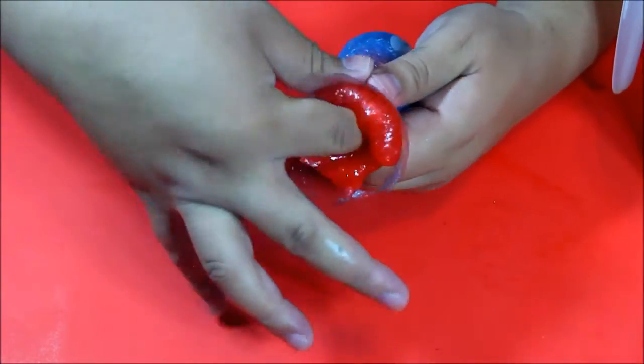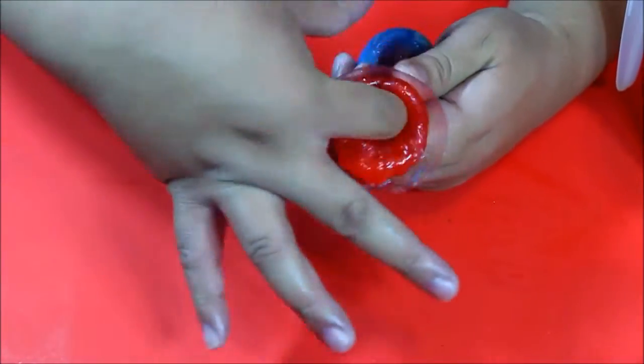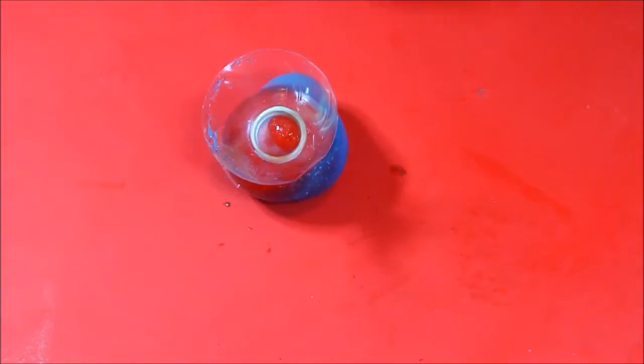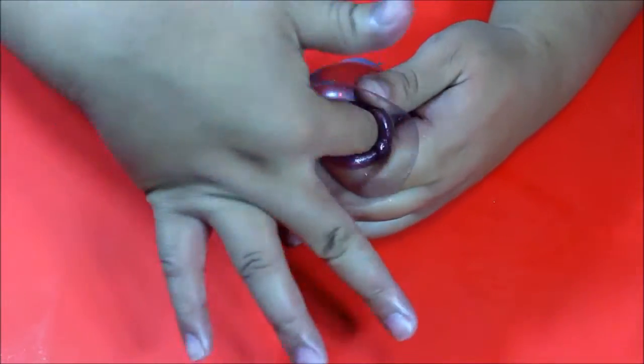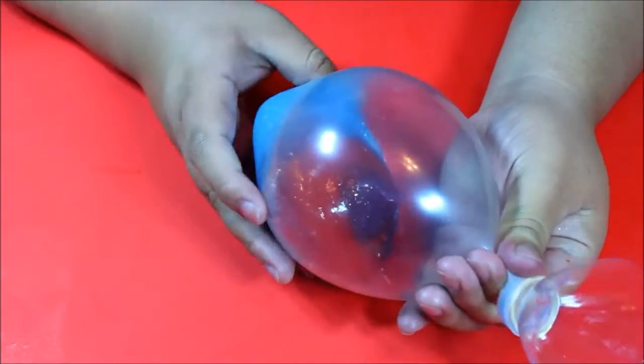And our red. Now you can add as much slime as you want. Just keep in mind that the more slime you add, the bigger your stress ball is going to be, and you can make it into whatever colors and patterns you would like. Once we have it fully stuffed, just go ahead and take off the actual nozzle part.